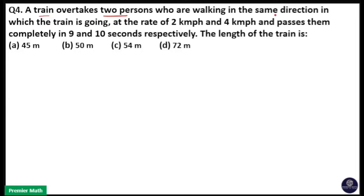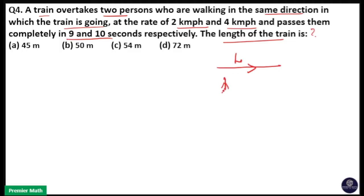A train overtakes two persons who are walking in the same direction in which the train is going, at the rate of 2 km per hour and 4 km per hour, and passes them completely in 9 and 10 seconds respectively. We need to find the length of the train.